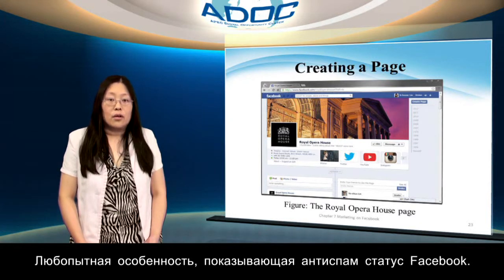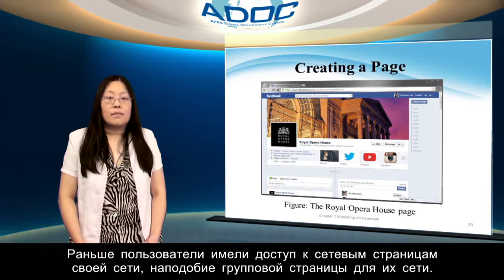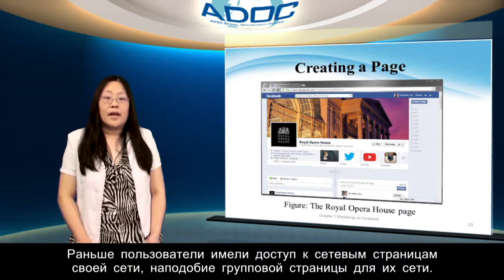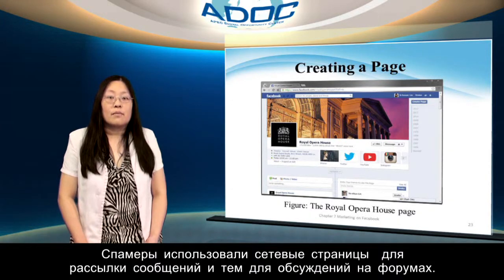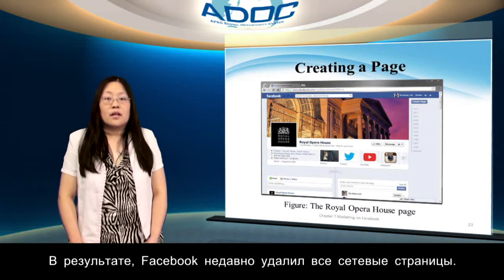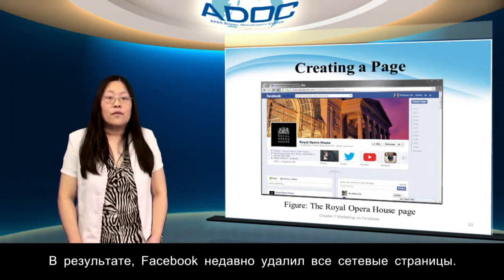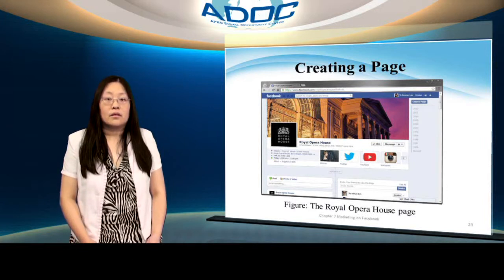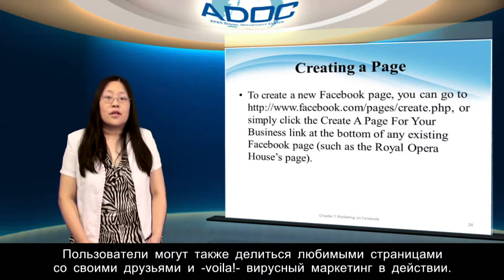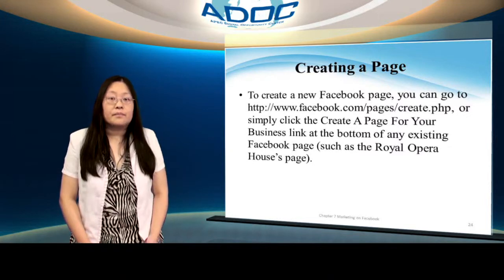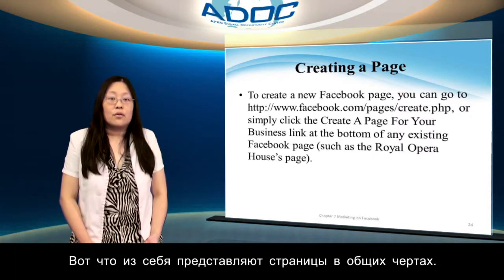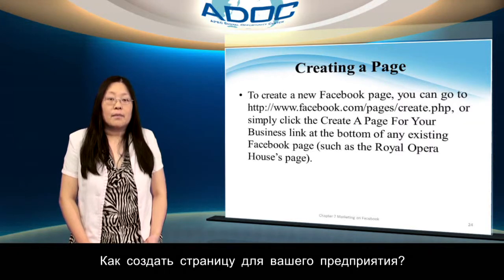Here's an interesting note that shows Facebook's anti-spam stance. People used to be able to access network pages for their network, sort of like a group page. Spammers took advantage of network pages to spam them outrageously with posts and discussion board entries, with the result that Facebook just recently removed all network pages. Users can also share their favorite pages with their friends. That's how pages look and work in overview — how can you create a page for your own business?